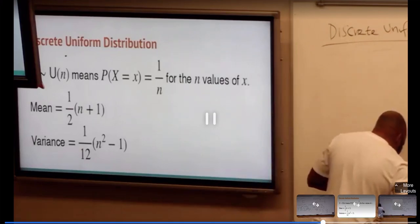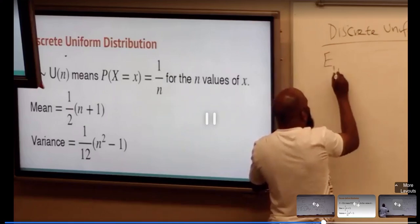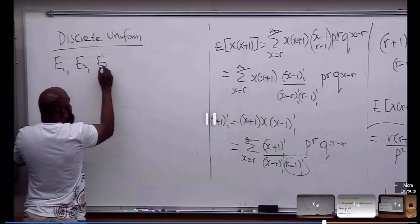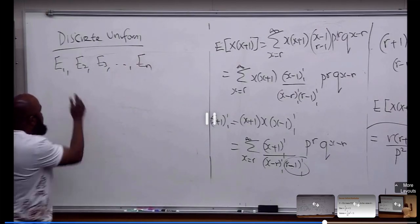If I got E1, E2, E3, up to EN, and all the E's here lie in the sample space Omega.